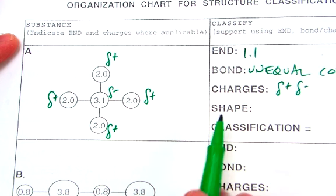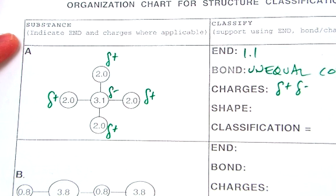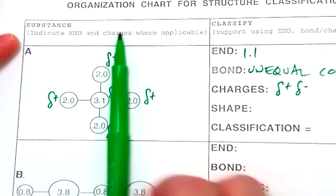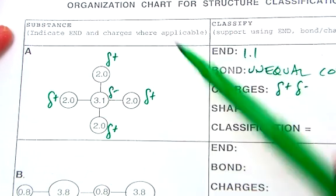When we look at this, this is a symmetric molecule. The left side looks like the right, the top looks like the bottom, and they're all positives on the outside.